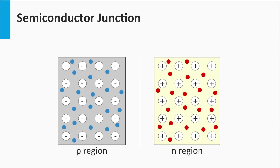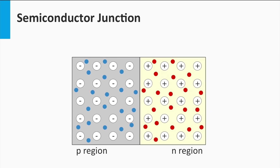Now we glue the n-type and p-type semiconductor materials together, and this is what we call a p-n junction. In reality, we take one piece of silicon material in which we intentionally dope one part p-type and the other part n-type.